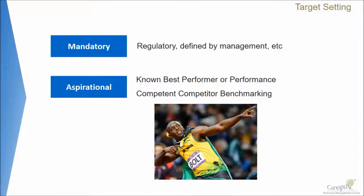There is no discussion or debate on those targets — we have to achieve it, period. But there could also be scenarios where we have aspirational targets, which means we want to improve the current state of the process, we want to challenge the status quo and show an improvement. In such scenarios we can use the concept of known best performer or known best performance. For example, if I wish to run a hundred meter dash, I would know that Usain Bolt has established a standard — he is the known best performance, world-class performance for a hundred meter dash speed.